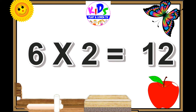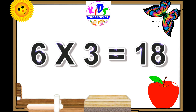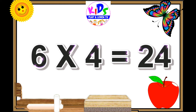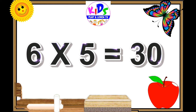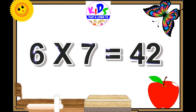Six ones are six. Six twos are twelve. Six threes are eighteen. Six fours are twenty-four. Six fives are thirty.